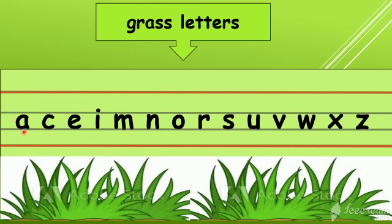The first letter is A. Now repeat after me — A. Make a curvy curve, go up, come down. Make a curvy curve — A. Draw a slanting line and make a curvy curve.